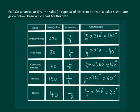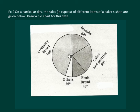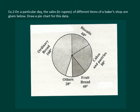Now we are in a position to draw the pie graph. To draw the pie graph, we first draw a circle, then draw a radius, and using a protractor mark an angle of 160 degrees and draw the line. This will represent ordinary bread that costs Rs. 320.